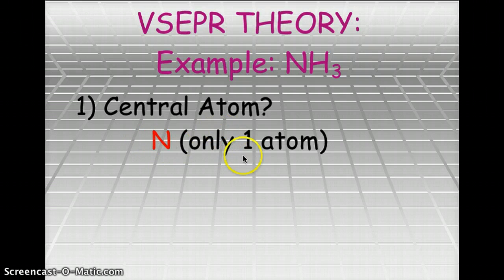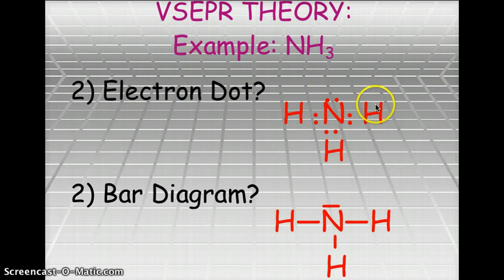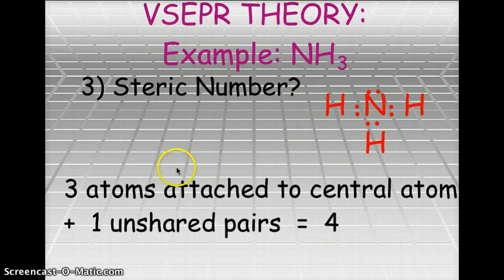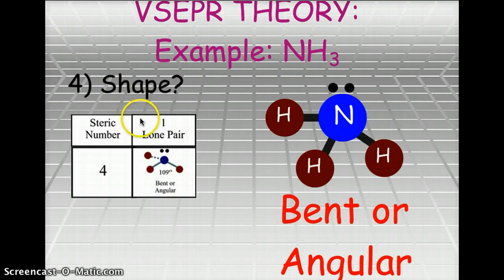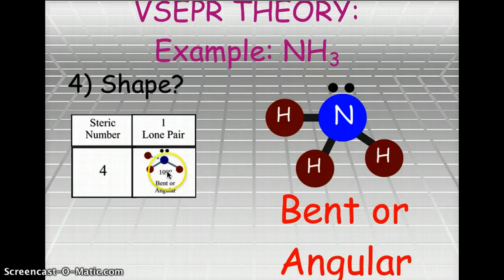Ammonia, NH3 — nitrogen is the central atom because it is only one atom and has three bonding sites. The electron dot diagram shows three hydrogens bonded to nitrogen, with nitrogen having a lone pair on top. The steric count is three atoms attached plus one unshared pair, giving a steric number of four. With steric number four and one lone pair, we get a bent or angular molecule, with the three hydrogens forming a pyramid opposite the lone pair, each at 109 degrees from each other.